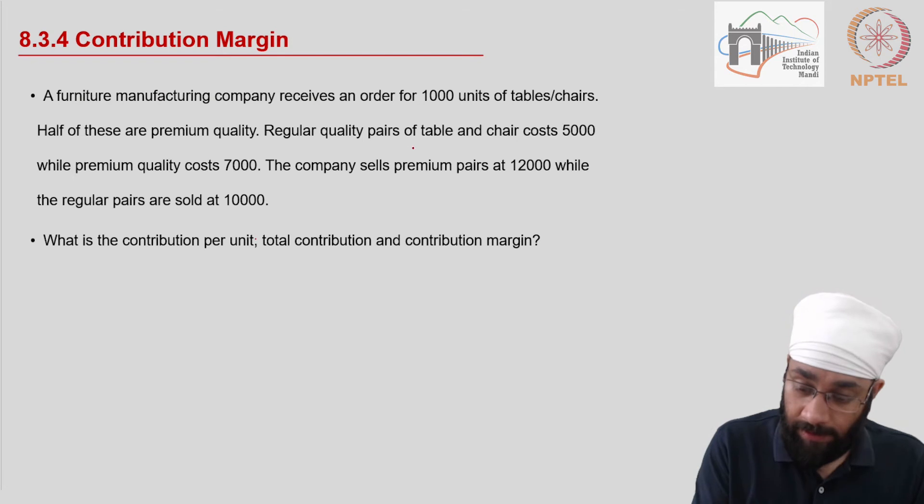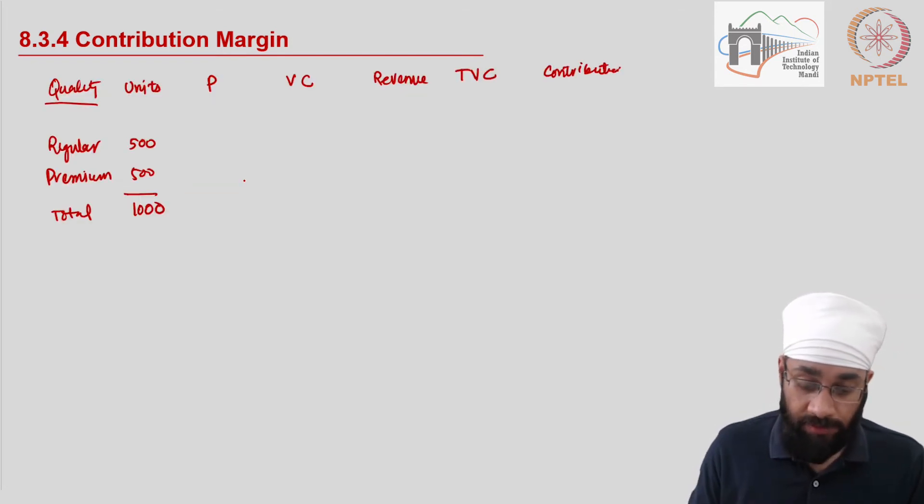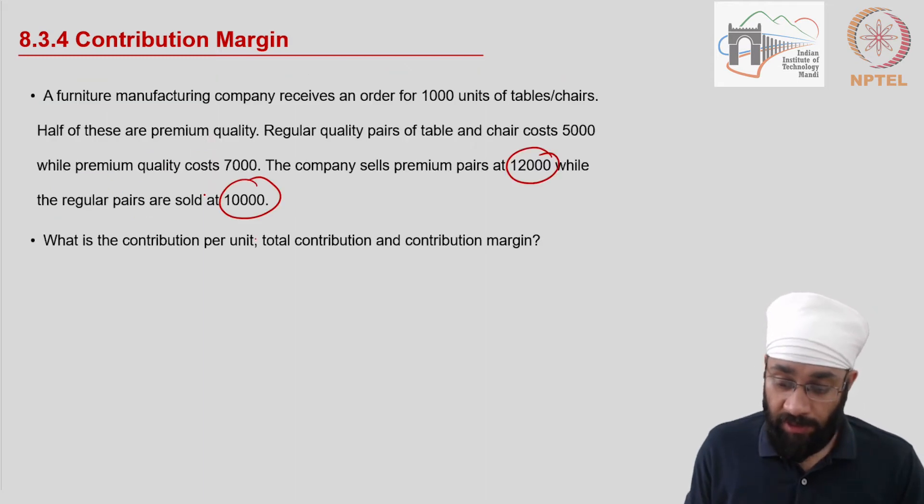So the price is premium 12,000 and regular 10,000. Premium is 12,000, regular is 10,000 per piece. The variable cost is 5,000 and 7,000.